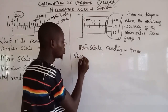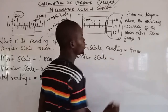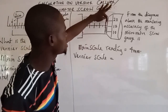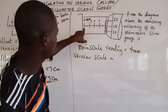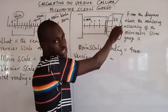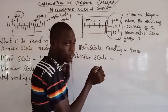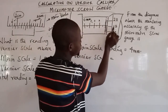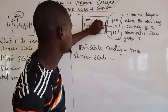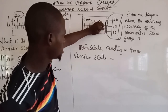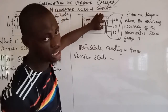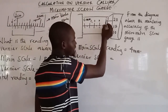Now for the vernier scale reading: you look at all the lines on the thimble scale and find where one line coincides directly with the datum line. Checking all the lines, this one here appears to be drawn directly from the datum line. Counting along: 10, 11, 12, 13, 14, 15 — and this line here is 16. So the coinciding line is at position 16.